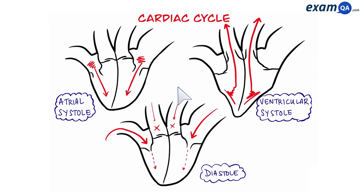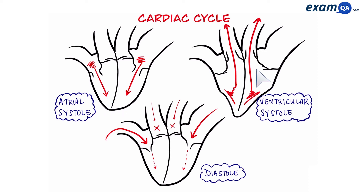In summary: we have atrial systole, where blood flows from the atria into the ventricles; followed by ventricular systole, where blood flows from the ventricles through the arteries; and finally diastole, where blood flows back into the heart via the veins.